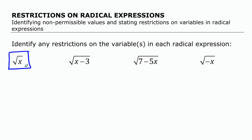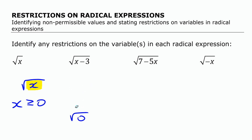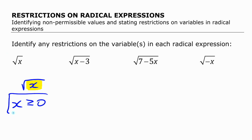Let's start with this one right here: square root of x. The square root function is only defined for numbers that are zero or greater. So if this is an x under here, the values we put there have to be greater than or equal to zero. You can have square root of ten, seven, or even zero, but you can't have square root of negative three or any number below zero, assuming we're talking about real numbers. So the restriction is x has to be greater than or equal to zero, and the non-permissible values are all values less than zero.